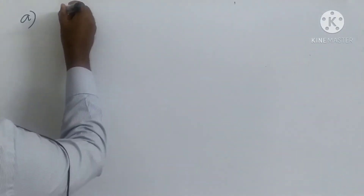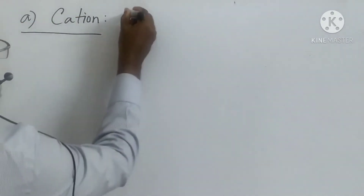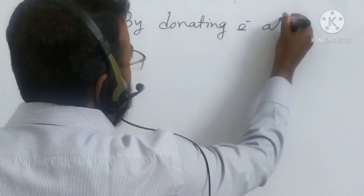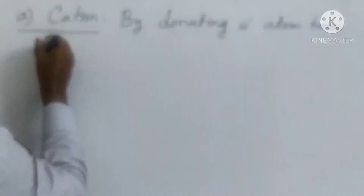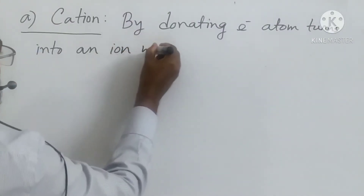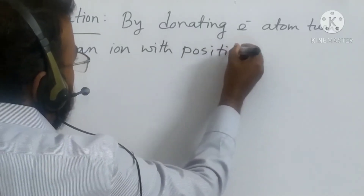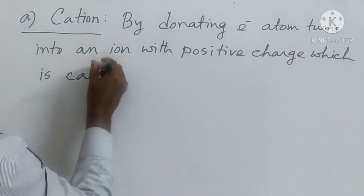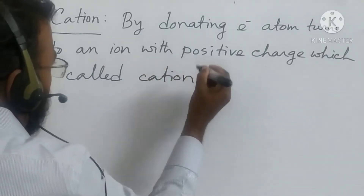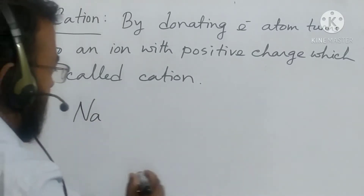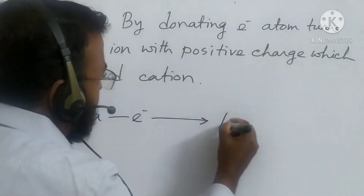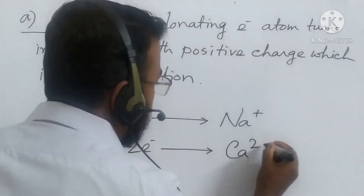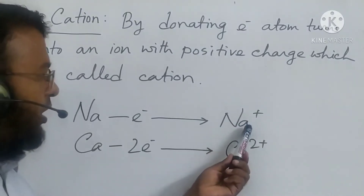Number A: by donating an electron, an atom turns into an ion with a positive charge, which is called a cation. For example, sodium donates one electron and becomes sodium⁺, which is a cation. Calcium donates two electrons and becomes calcium²⁺. I have given two examples: sodium and calcium.